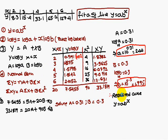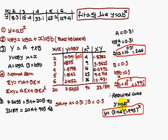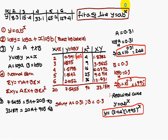Substituting small a and small b into the original form, the required curve is y = 2.4 × (1.095)ˣ. This completes the fitting of a curve of the form y = a·bˣ. Thank you.